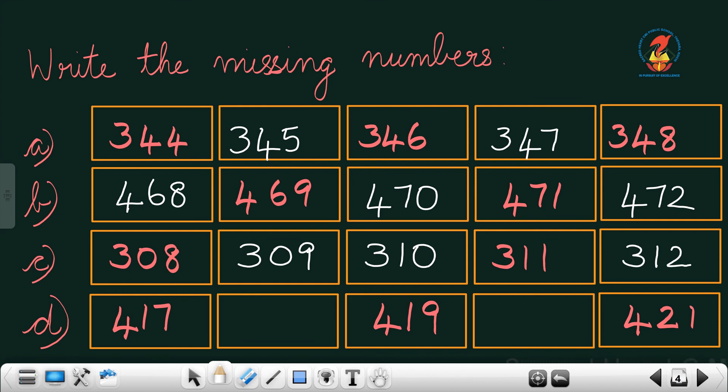The next question. In the first box, the number is 417. What is the next number? 418. What is the next number? 419. What comes after 419? 420. What is the next number? 421.